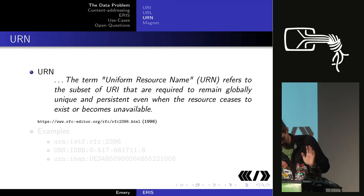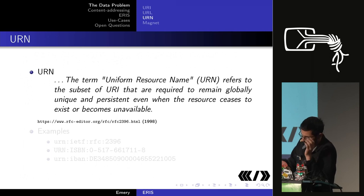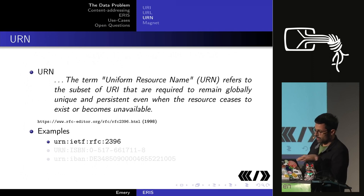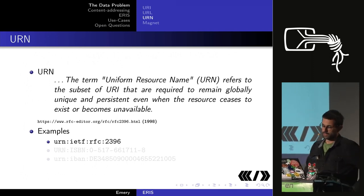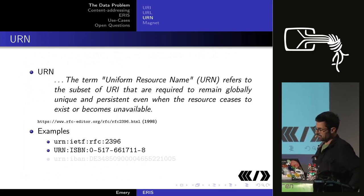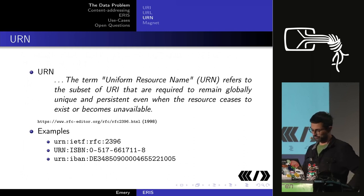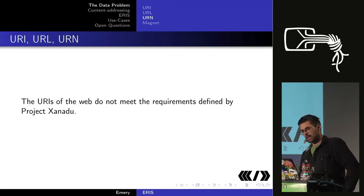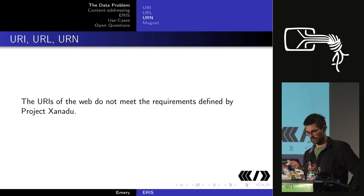The other URI category is the URN, which refers to a subset of URI required to remain globally unique and persist even when the resource ceases to exist. Standards use this URN format — books have an international book number in URN form. A bank account is a good example: if you close your account, the bank doesn't recycle your IBAN. It's persistent. But this isn't really what Xanadu said we would need.